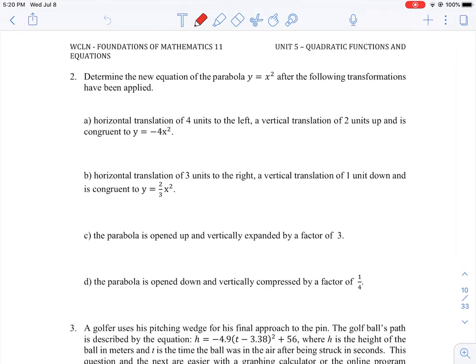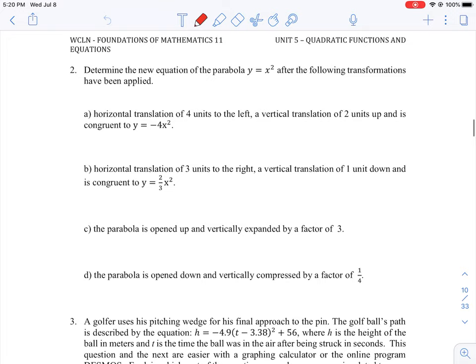All right, so let's take a look at question number two here, where we're asked to figure out what some of the equations are if we apply certain translations or offsets to the existing equation, and then what would the resulting new function be. So our new equation is based off of the basic parabola, so it's y equals x squared.